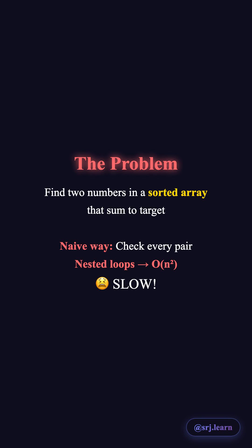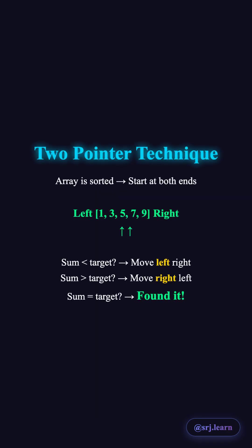Two pointers is smarter. Since the array is sorted, start with pointers at both ends. If the sum is less than target, move the left pointer right to get a bigger number. If the sum is greater, move the right pointer left for a smaller number. If it matches, you found it. Why is this better? You only traverse once — each pointer moves at most n steps, so it's O(n) time.